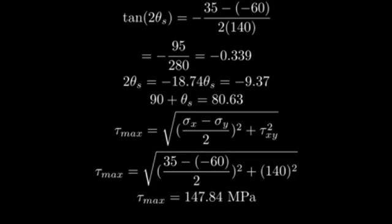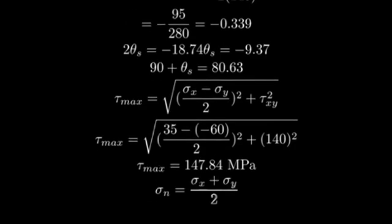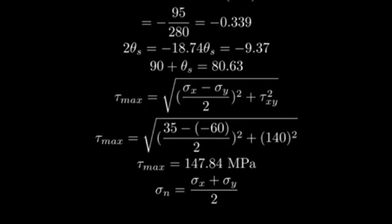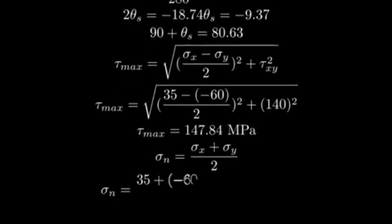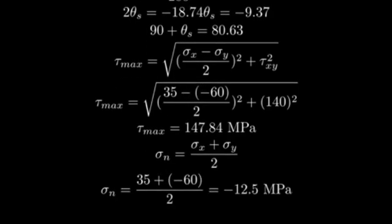Finally, for the corresponding normal stress, we use sigma n equals sigma x plus sigma y over 2. Plugging in our values, we get 35 plus negative 60 over 2, which equals negative 12.5 MPa.